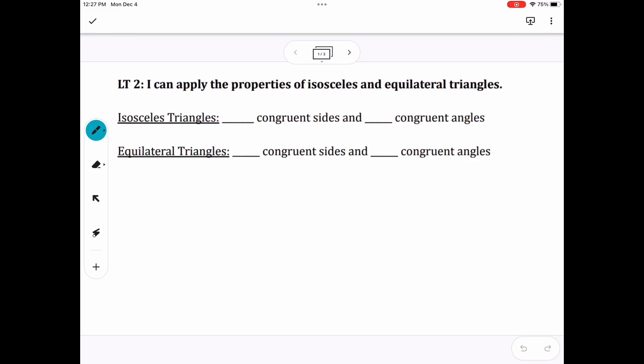Today, we're talking about applying properties of isosceles and equilateral triangles. We've already talked about these two triangles, but to remind us, isosceles triangles have two congruent sides and two congruent angles. Equilateral triangles have three congruent sides and three congruent angles.